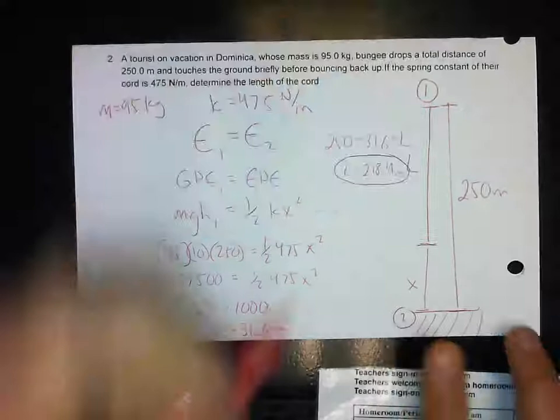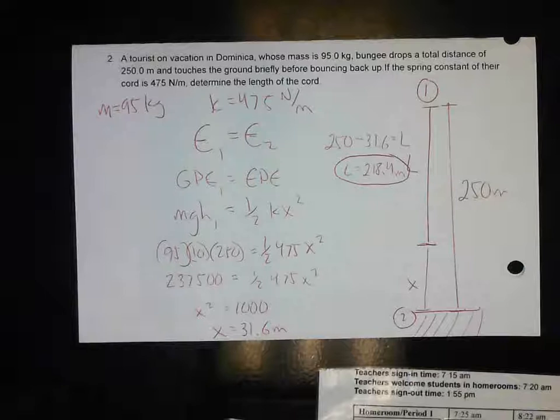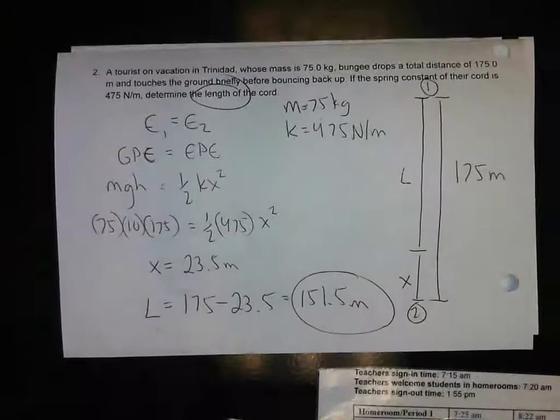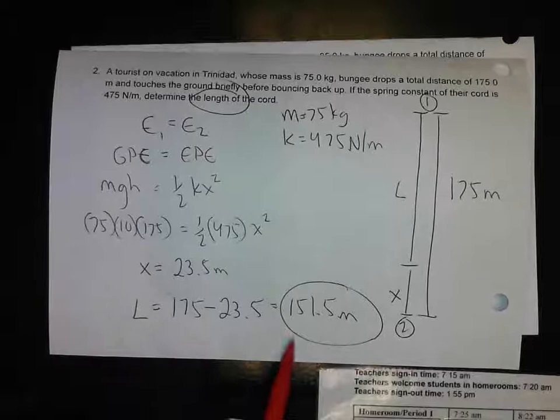You should get 218.4 meters for the Dominica problem. For the other version — the same exact process — for x you get 23.5, and when you subtract, you get 151.5 meters.